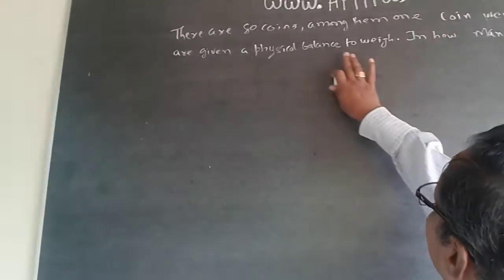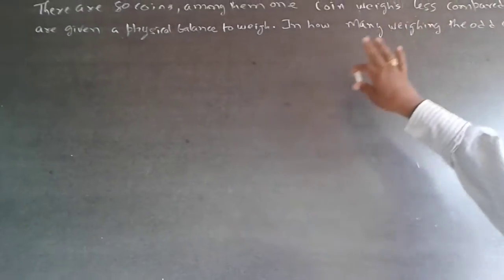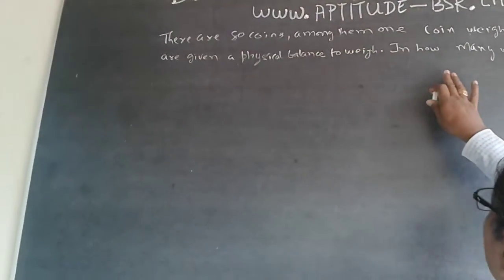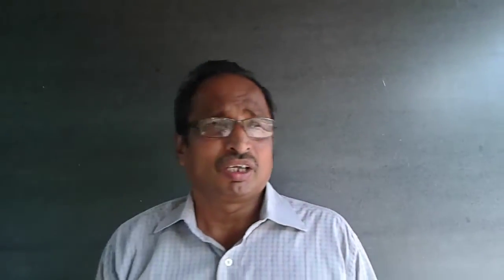The question is: there are 80 coins, among them one coin weighs less compared to the others. You are given a physical balance to weigh. In how many weighings can the odd coin be found? There are totally 80 coins given to you, of which one coin weighs less. A physical balance is also given. You need to find out in how many attempts you can identify the defective coin. I have been getting multiple answers for this.